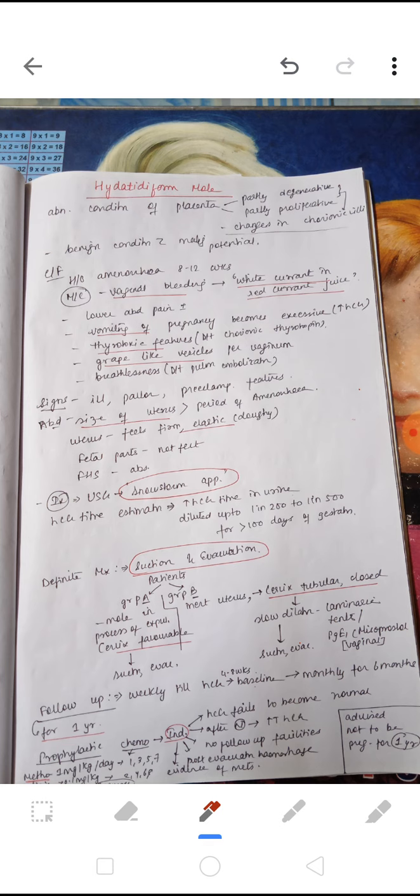HCG titer estimation is very important. There is increased HCG titer in urine diluted up to 1 in 200 to 1 in 500 that will persist beyond 100 days of gestation.